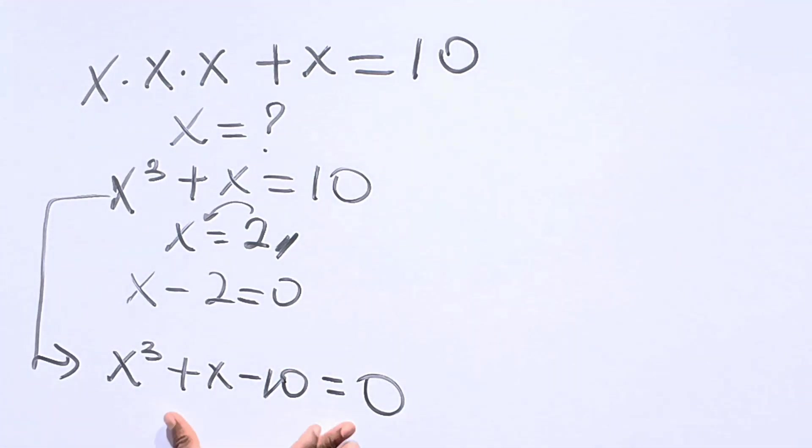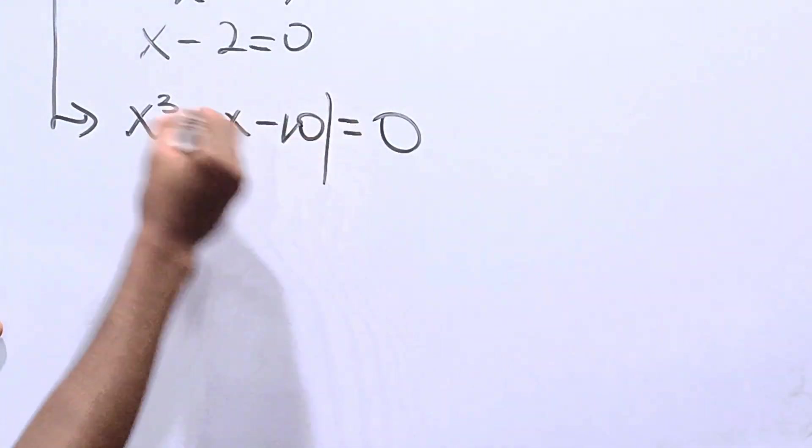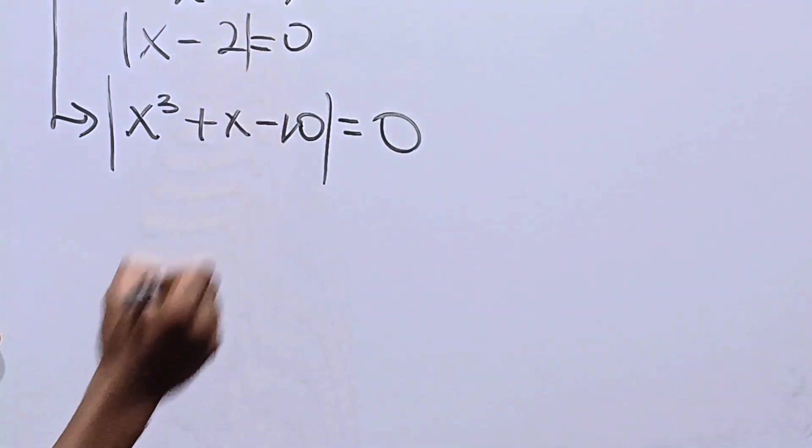From here, we can do something. Let's divide this expression by this expression. So we have x minus 2.